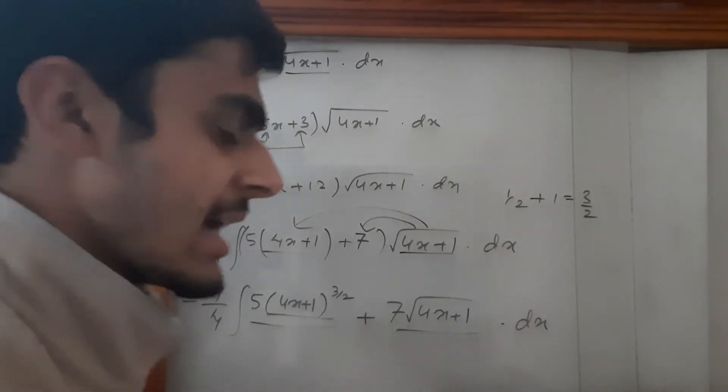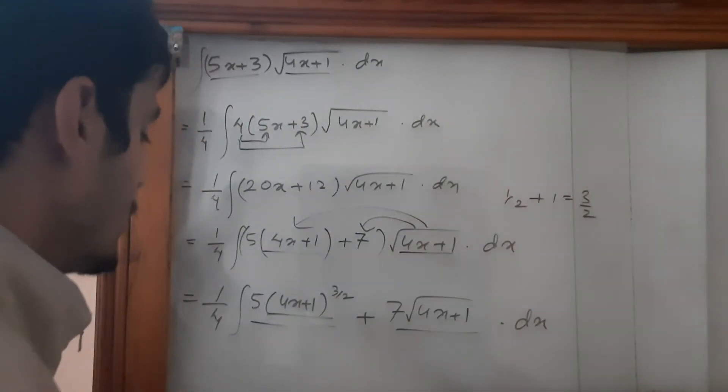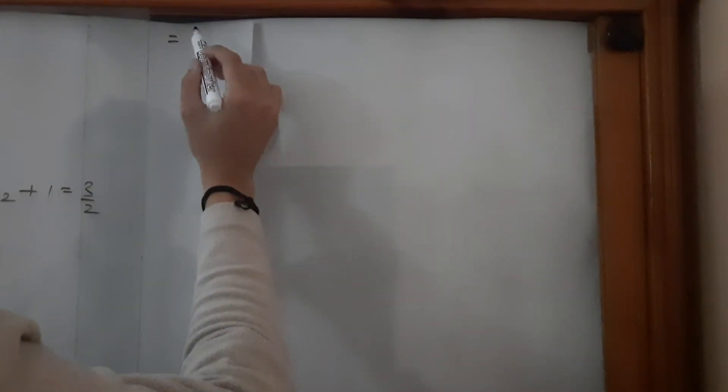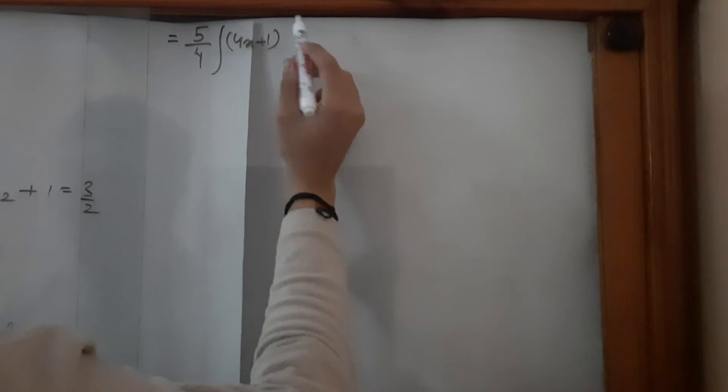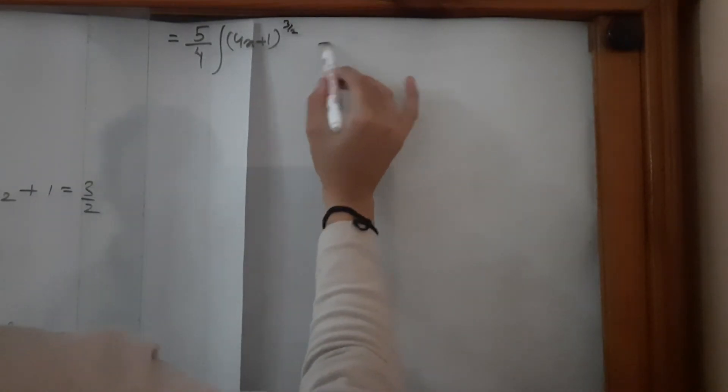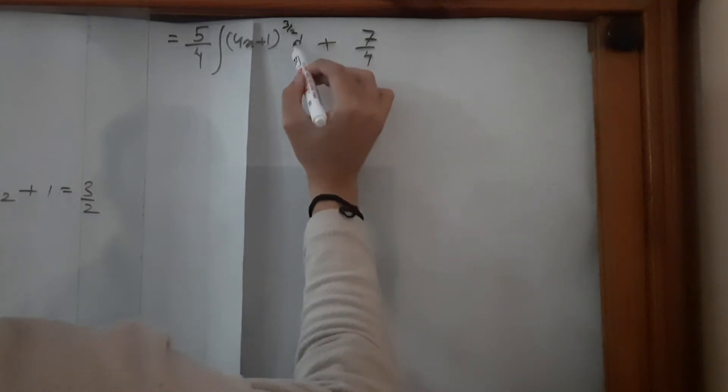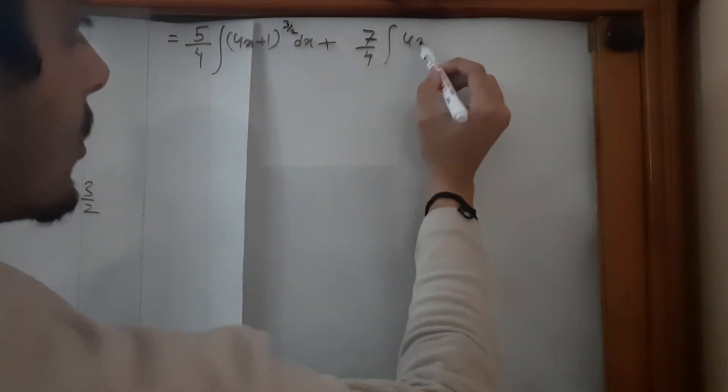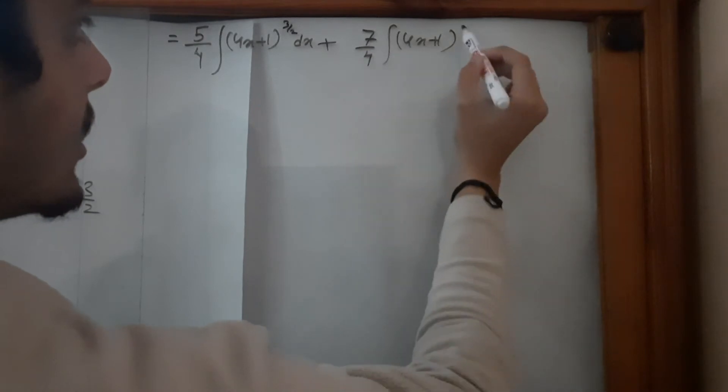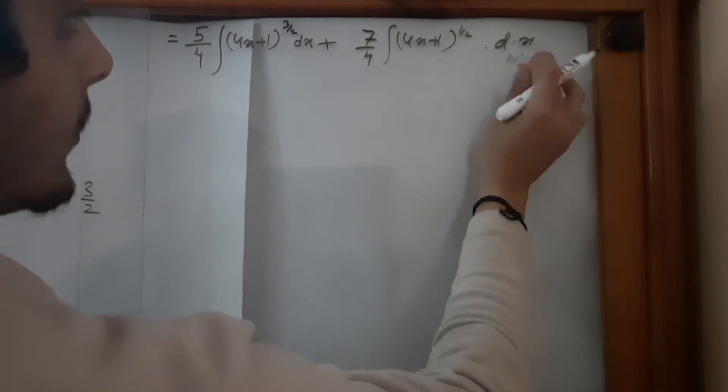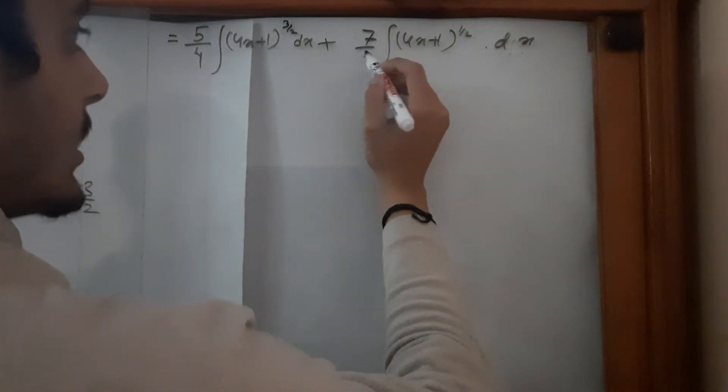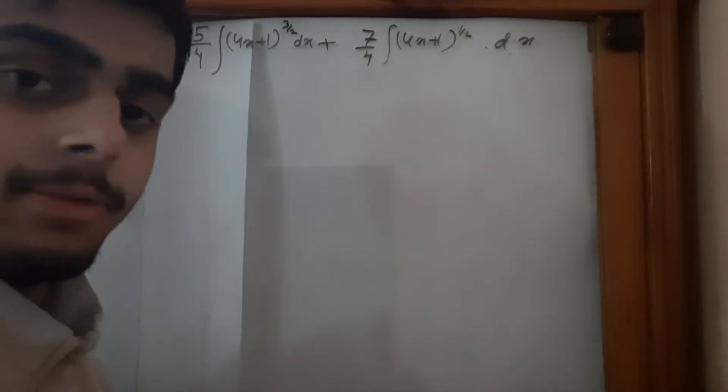Now let's split these two terms into different integrals and carry out normal integration. It is equal to 5/4 times the integral of (4x + 1)^(3/2) plus 7/4 times the integral of (4x + 1)^(1/2) dx. The 1/4 multiplies both elements, so 7 gets divided by 4 as well and 5 gets divided by 4 as well.